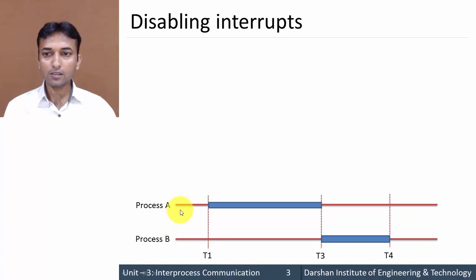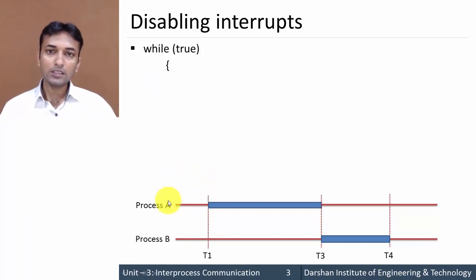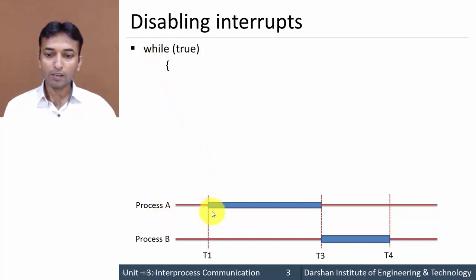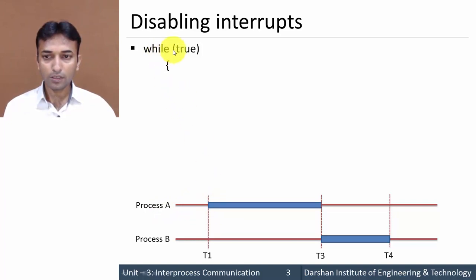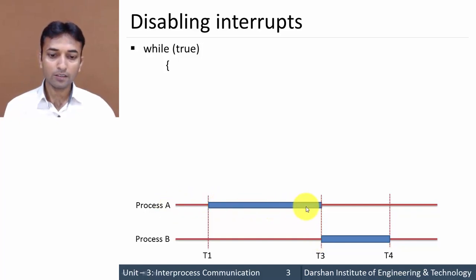Now let us see the algorithm. The first step is: while true — whenever this condition becomes true, a process is trying to enter into the critical region. This condition becomes true for process A at time t1, and for process B at time t3. Process A remains in the critical region up to time t3, and process B remains in the critical region up to time t4.